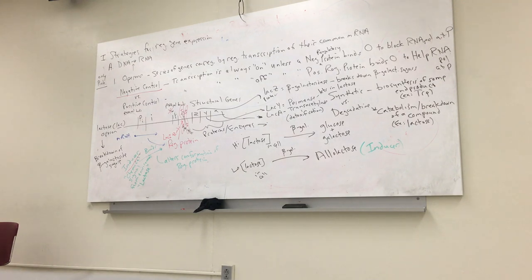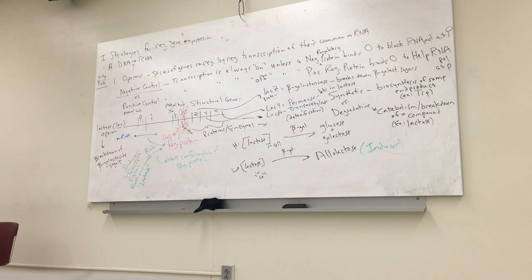A student asks whether allolactose could be present outside the cell and brought in by permease. That could happen, but it's unlikely — allolactose is not something you'd typically find in nature and is made by beta-galactosidase inside the cell.